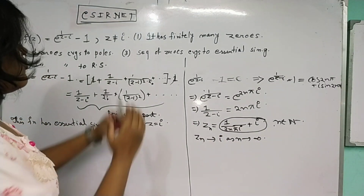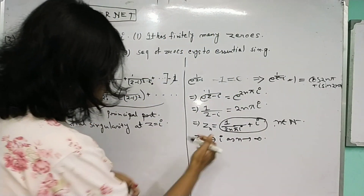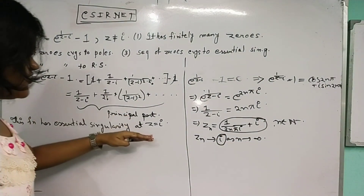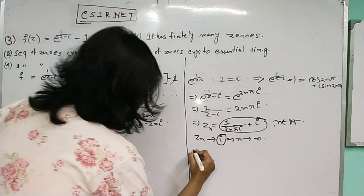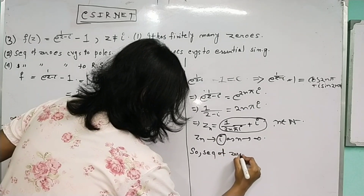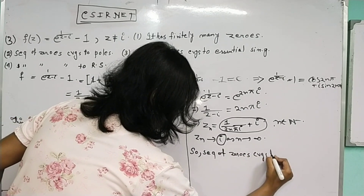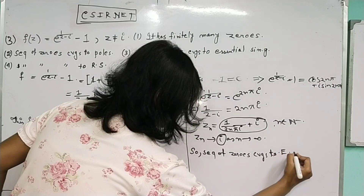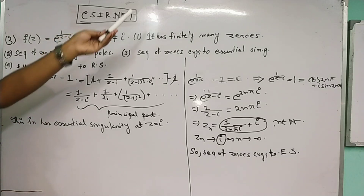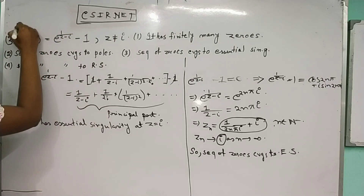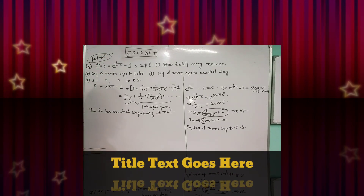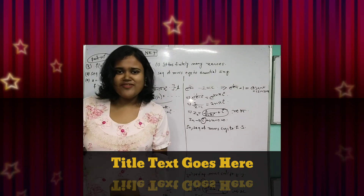The sequence of zeros converges to i, and I have proved that the function has an essential singularity at z = i. So the sequence of zeros converges to an essential singularity. This question came in CSIR NET December 2020, Part C, for 4.75 marks. Thanks friends, thank you for watching the video.